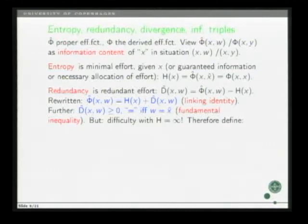Because of the definition of effort functions, entropy is simply equal to the value on the diagonal, so to speak, of the effort functions. Redundancy is redundant effort. So, it's ideally defined as the real effort minus the minimal effort minus the entropy. If you rewrite that, you find that effort is entropy plus this term, redundancy. This, I denote the linking identity. And further, you find that redundancy is non-negative with equality, if and only if w is adapted to x. This is what I call the fundamental inequality.